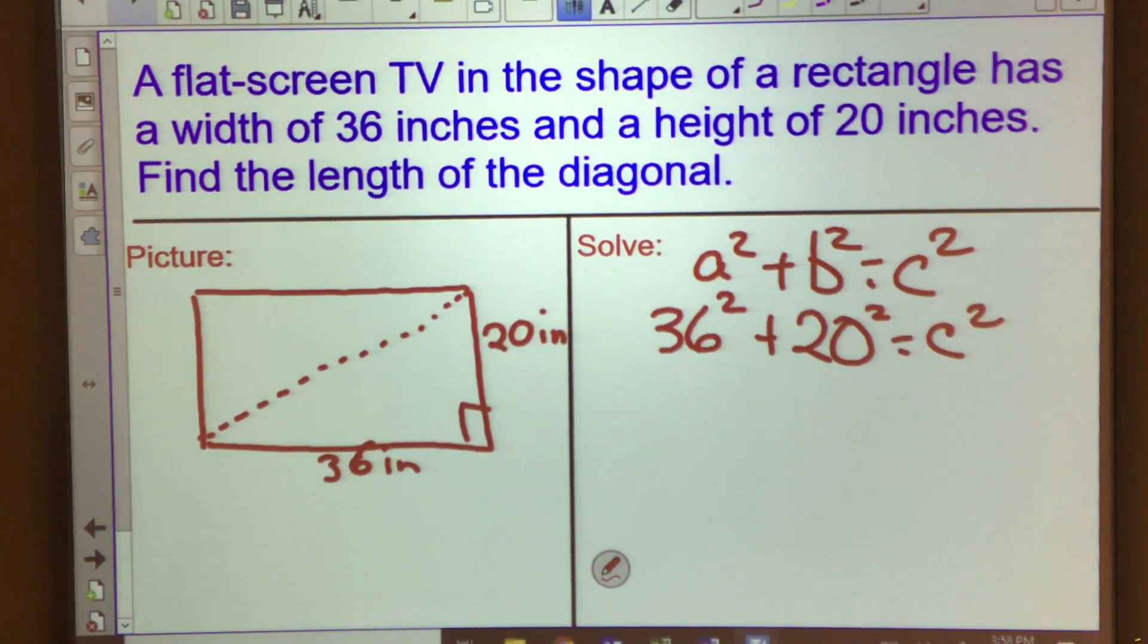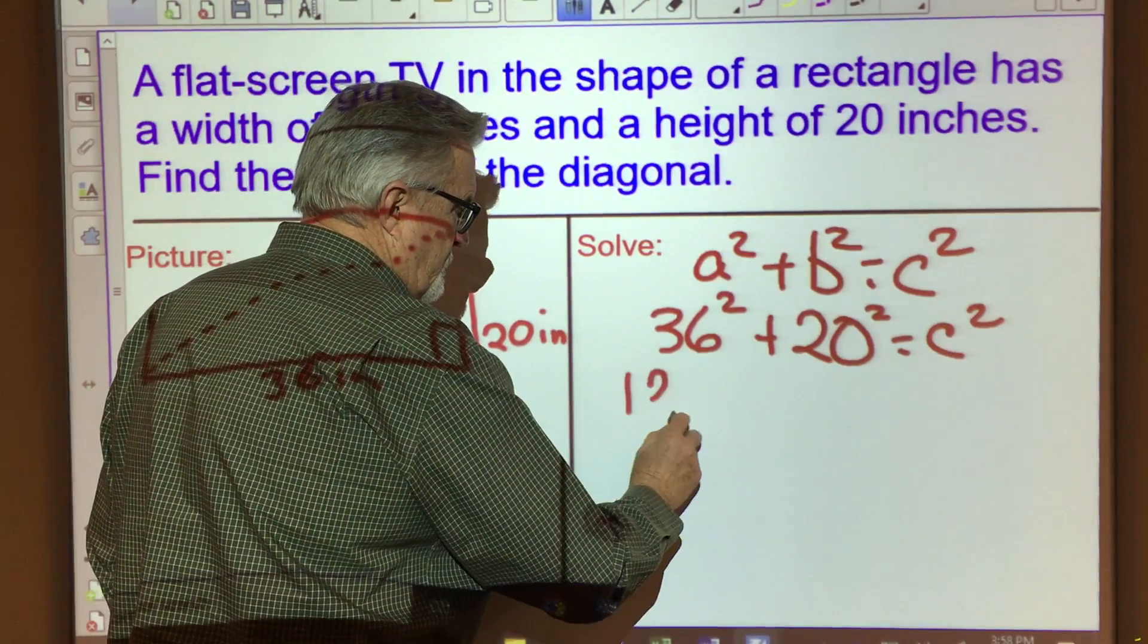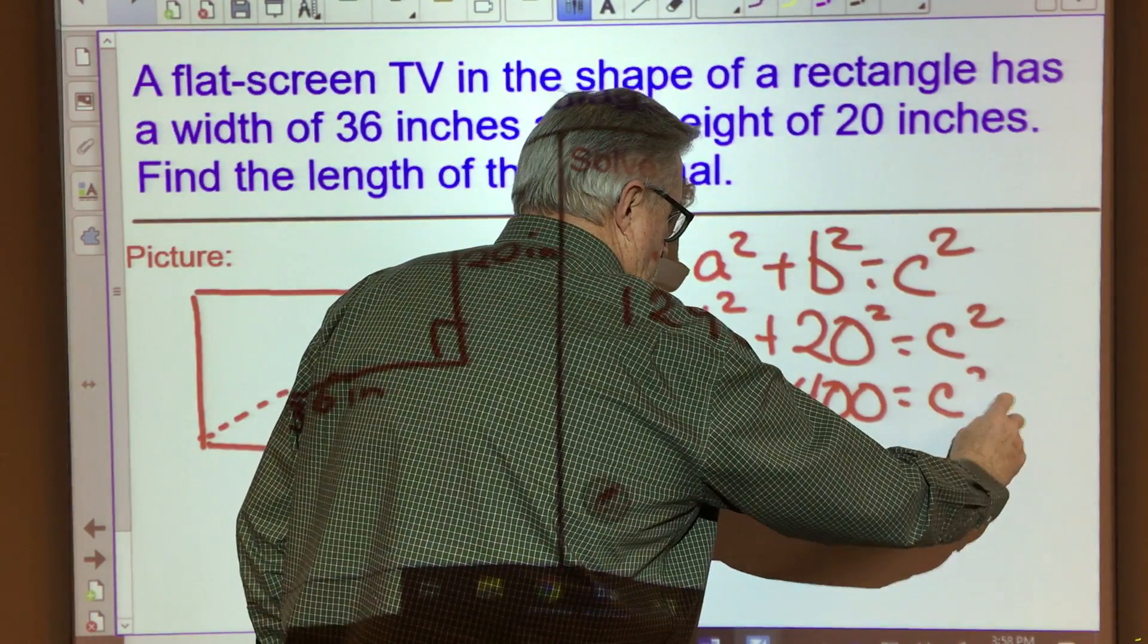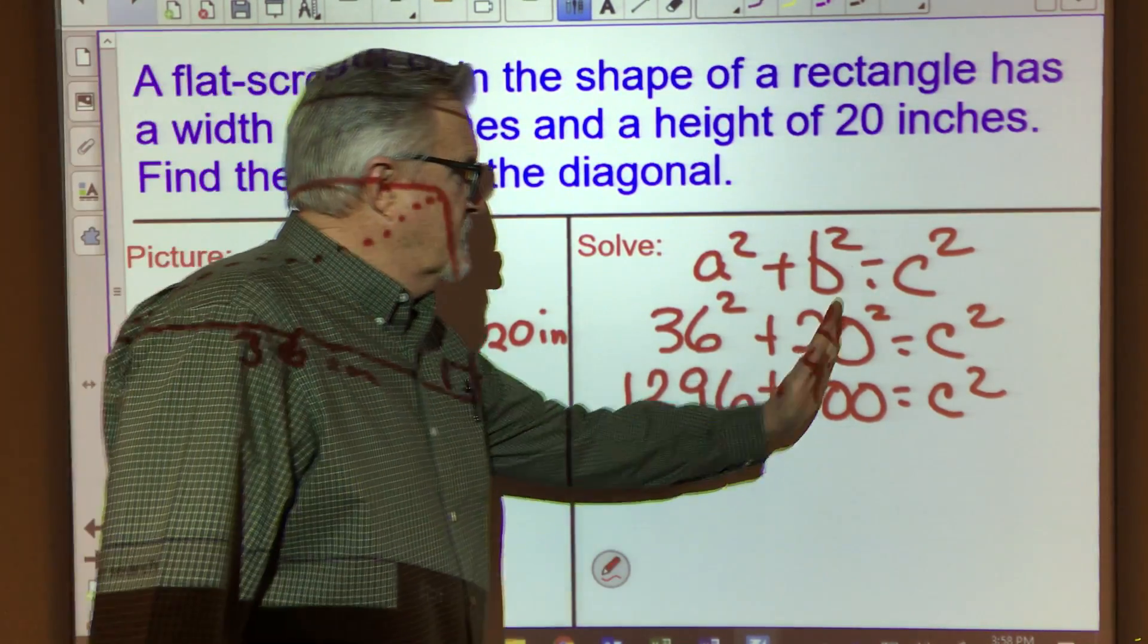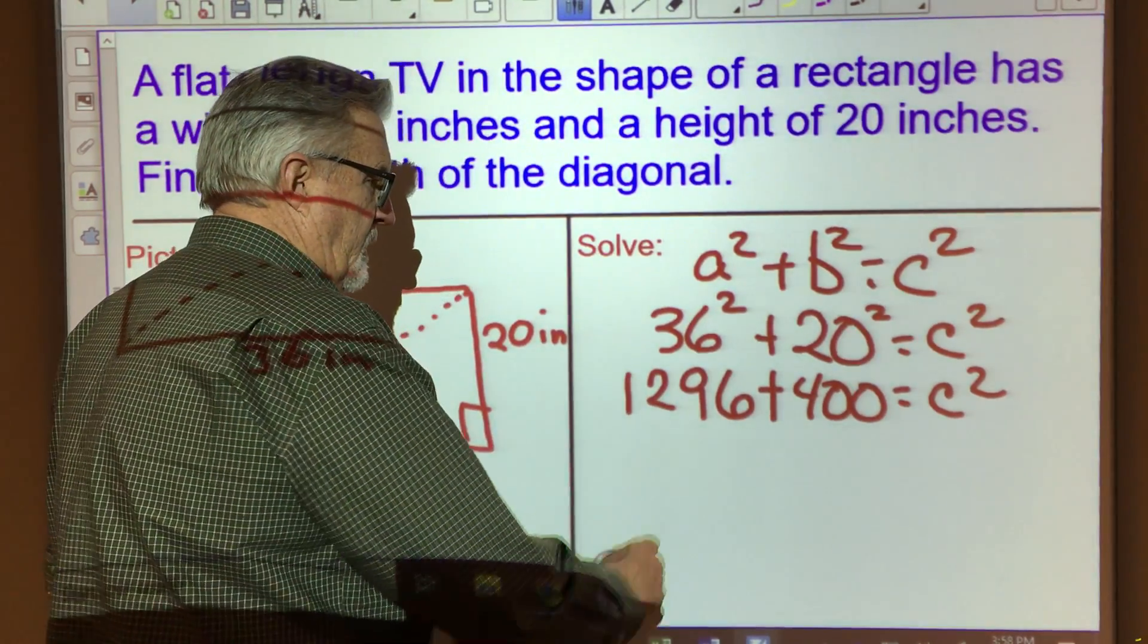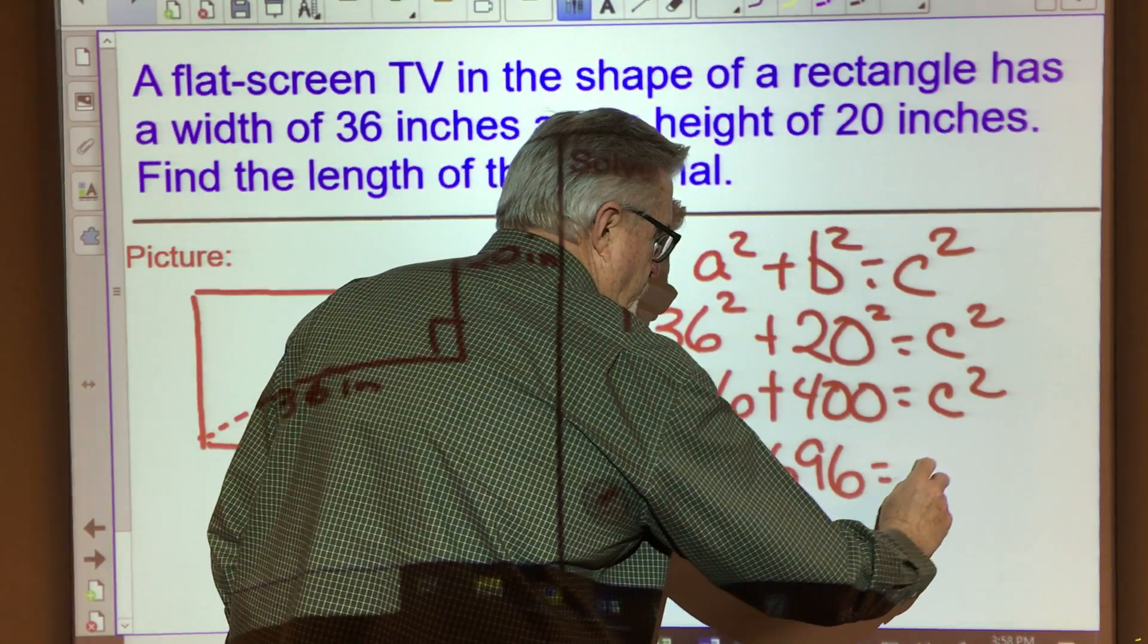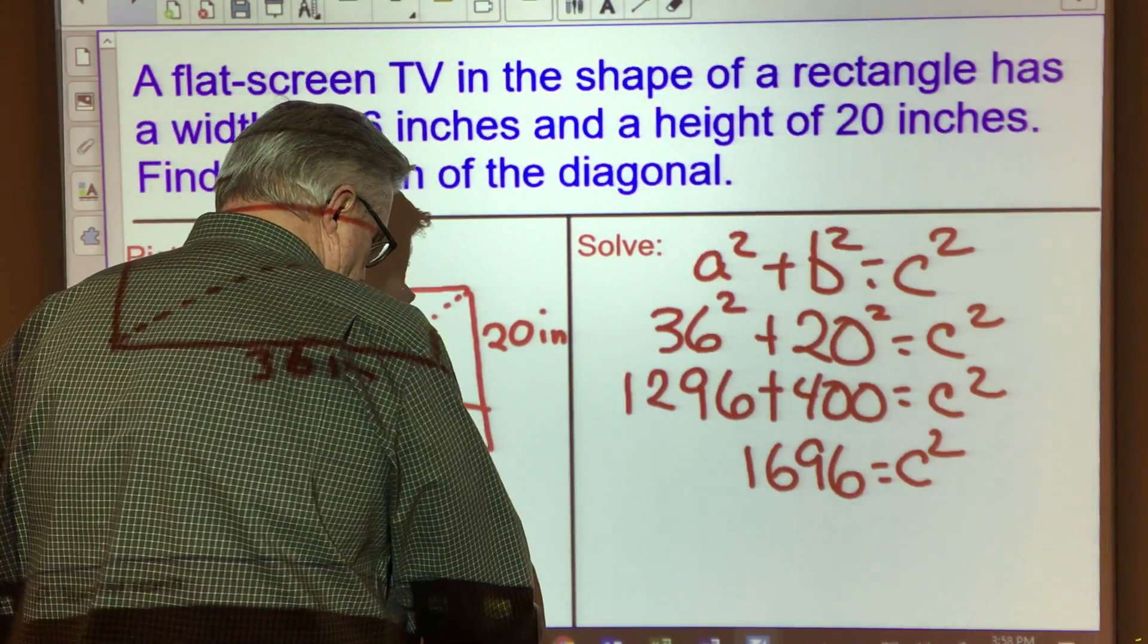1296. 20 squared is 400, so that is still equal to c². Since c is already isolated on this side of the equation by itself, let's go ahead and do the addition here. So we've got 1696 is equal to c².